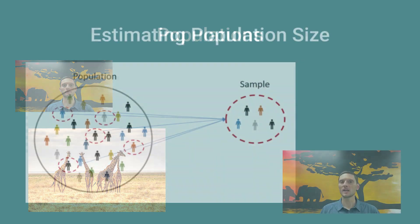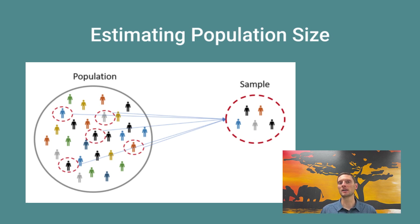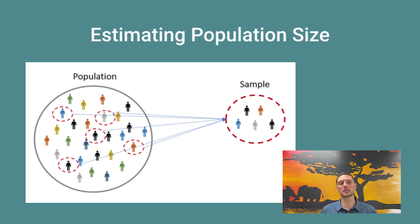It's really important to be able to estimate the size of a population, because the population size is the total number of individuals within it. It's important to keep track of trends to see how that population is growing or shrinking and the health of the population. It's usually not possible to count every individual due to camouflage, mobility, and sheer numbers, so we must estimate the population size based off of data and evidence.